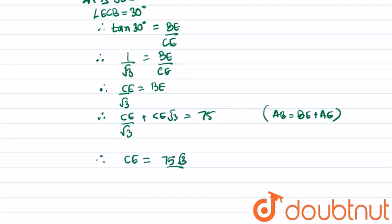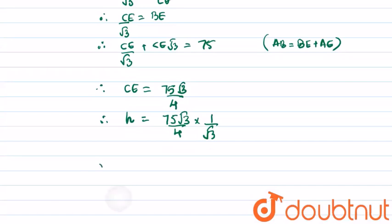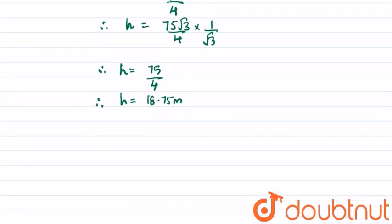Therefore for height, we calculate that 75 root 3 upon 4 times 1 upon root 3. Therefore we get that height equals 75 upon 4. Therefore the height of the pole is 18.75 meters.